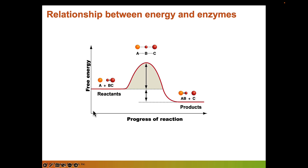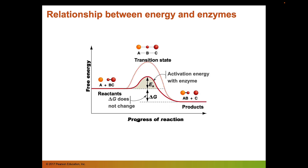On the free energy graph, reactants reach the transition state with a certain activation energy required to strain those bonds, then produce products. In this graph, the reactants have higher potential energy than the products, so this reaction occurs spontaneously. Enzymes change the activation energy portion of the graph — the activation energy is lower in the presence of an enzyme. But the delta G, whether or not a reaction is spontaneous, does not change. That's a really critical point.